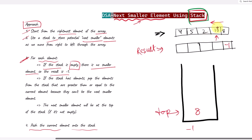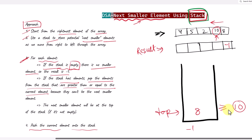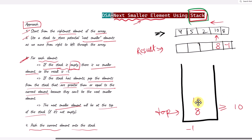Now we work with the element 10. First we check if the stack is empty — it's not. If the stack has elements, we pop elements that are greater than or equal to the current element. The current element is 10, and 8 is not greater than 10, so we don't pop it. This means 8 is the next smaller element, so the result will be 8. Then we push 10 onto the stack.